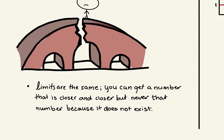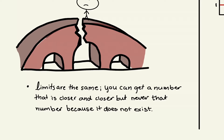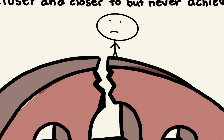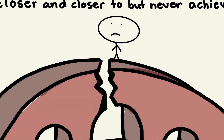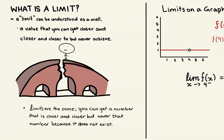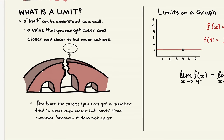Similarly, the concept of limits suggests the same idea — you can get a number that is closer and closer but never actually reach the value of the limit, because it simply does not exist. Just as the bridge did not exist at that specific point, that's why you would fall — and limits work exactly the same way.